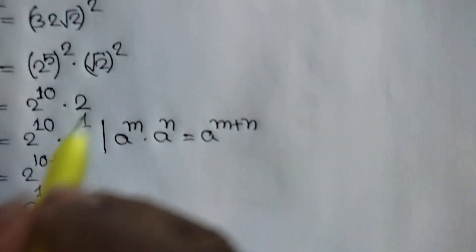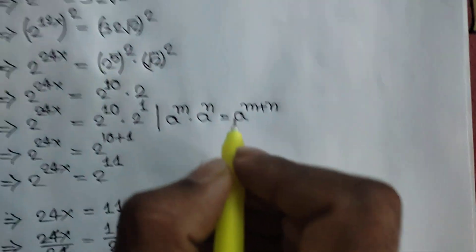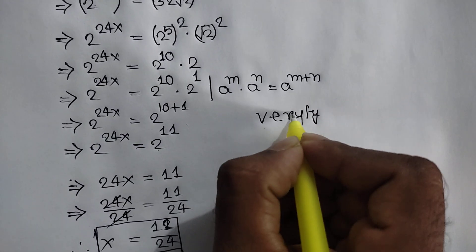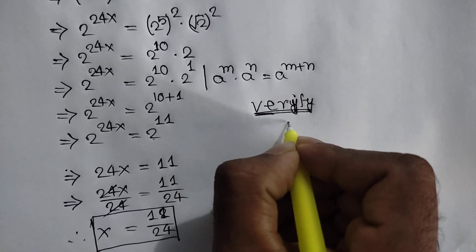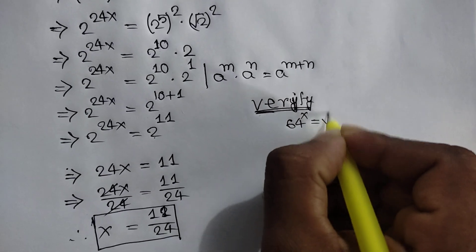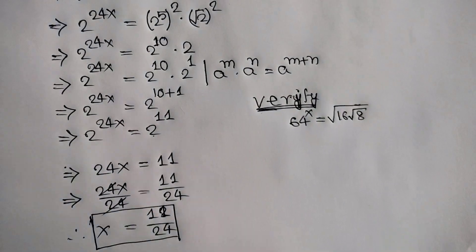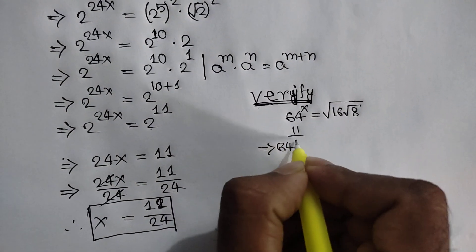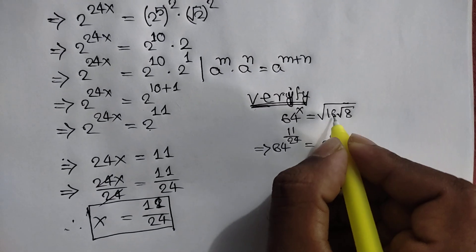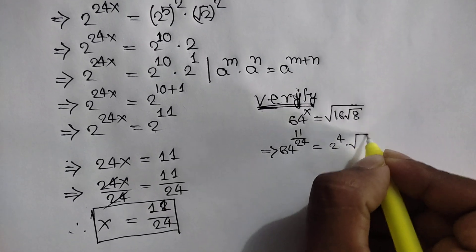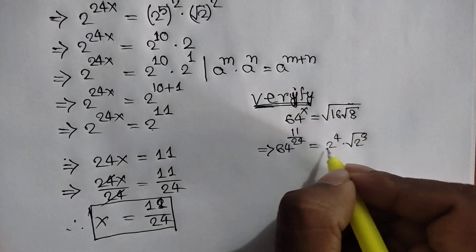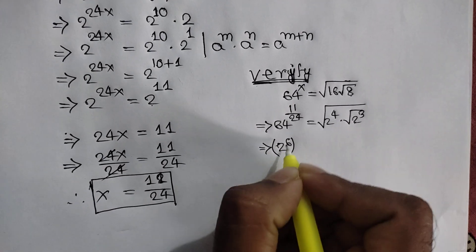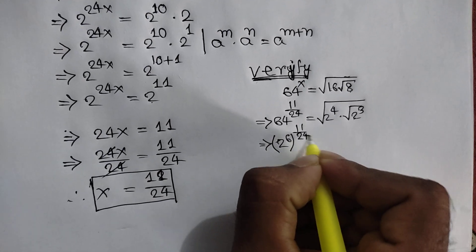Let's verify. Our equation is 64 to the power x is equal to the square root of 16 times the square root of 8. With x equal to 11 over 24, we can write the square root of 16 as 2 to the power 4, and the square root of 8 as 2 to the power 3, because 2 to the power 3 is the same as 8. And 64 we can write as 2 to the power 6.